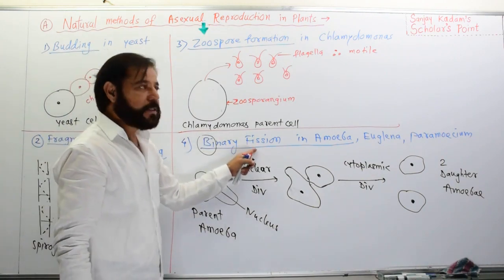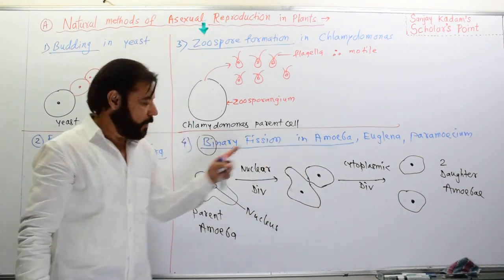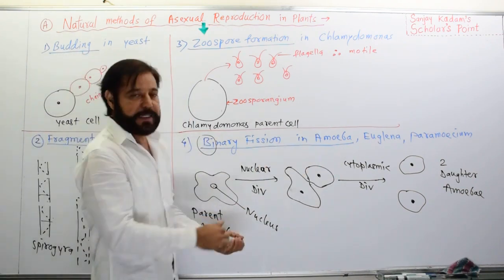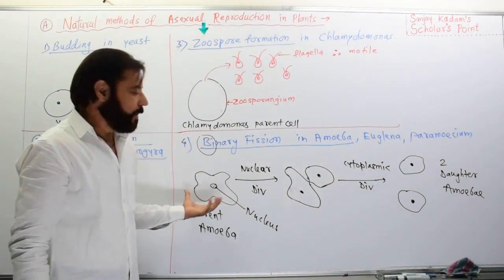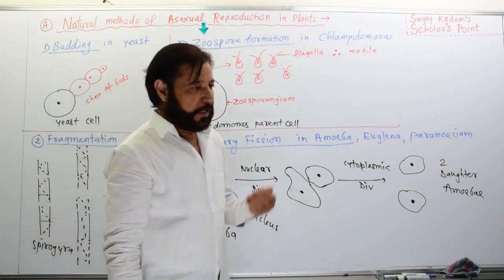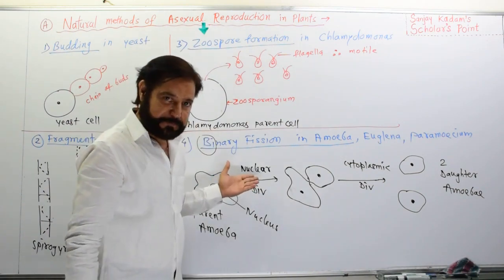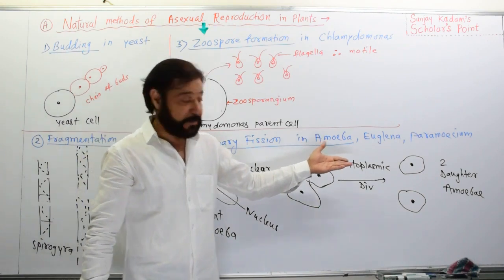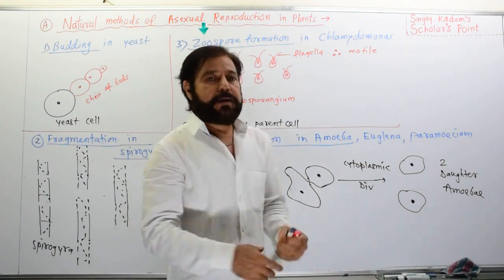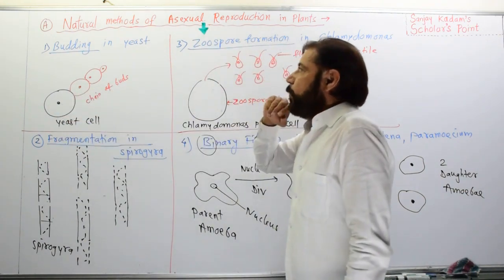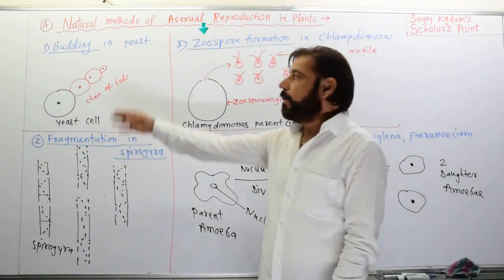In fission, a microscopic cell divides and two organisms are produced from one — it is a rapid method. The two daughter Amoeba are exactly similar to the parent Amoeba. In this way, Amoeba never dies — it is biologically immortal.